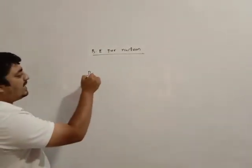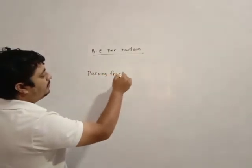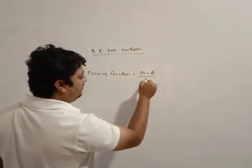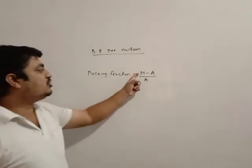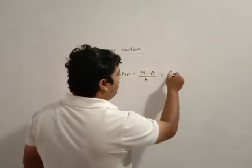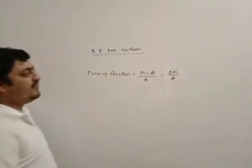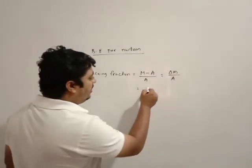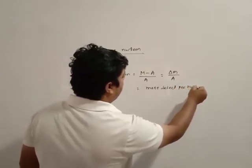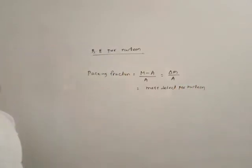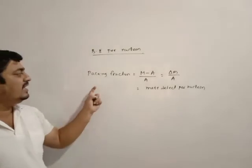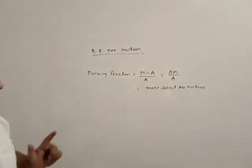Then, packing fraction is equal to (isotopic mass minus mass number) divided by mass number. We can also say it is mass defect per nucleon. This is called packing fraction. If packing fraction is negative, the nucleus is stable. If packing fraction is positive, the nucleus is unstable.